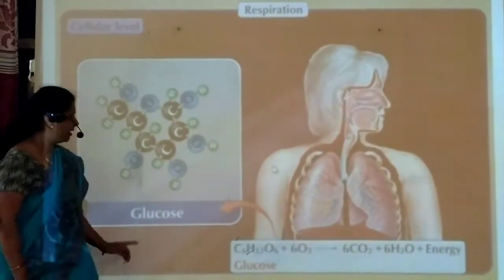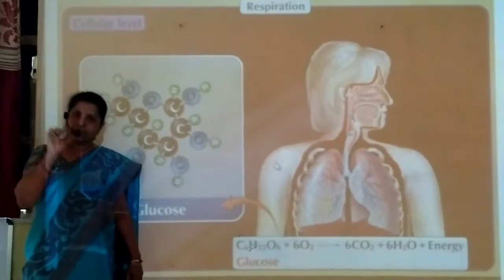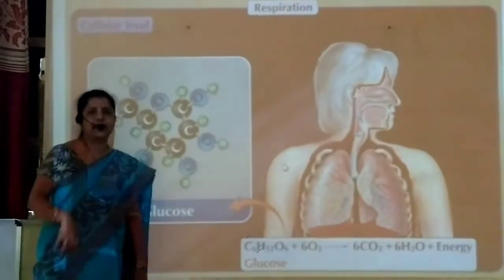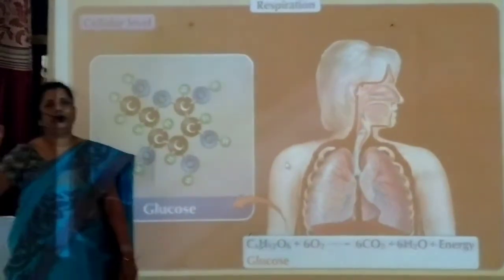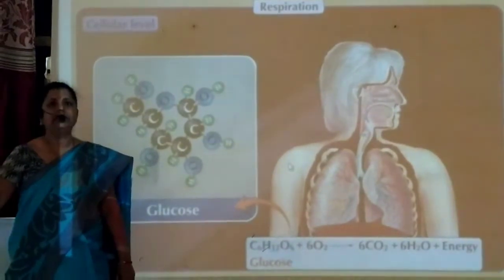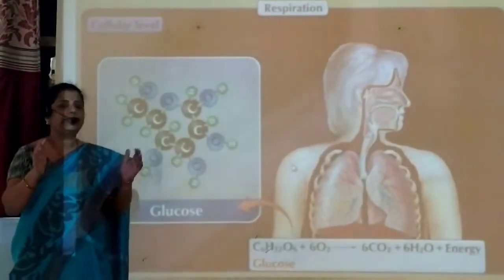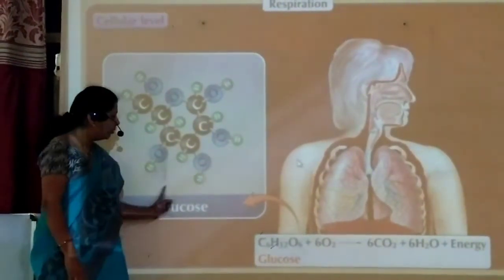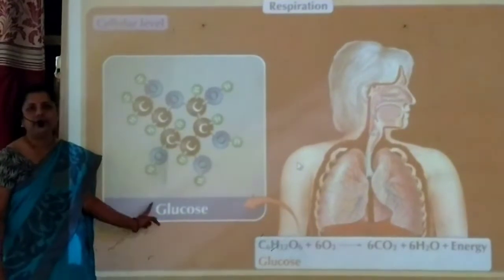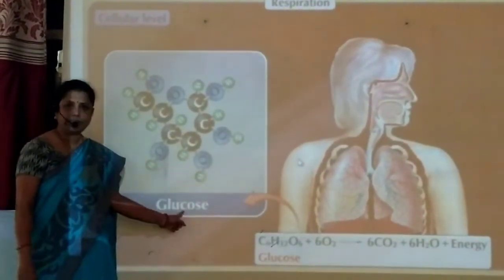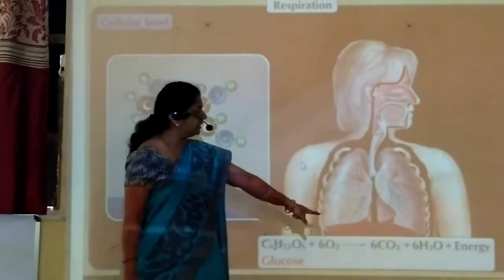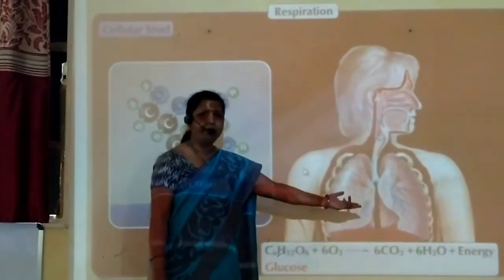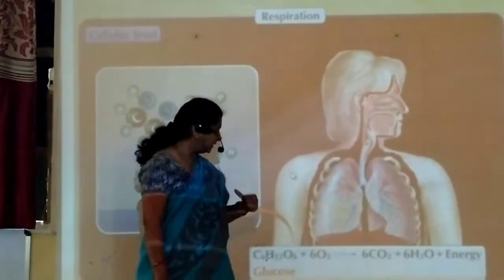The main respiratory substrate is glucose. The respiratory substrate is the substance which releases energy. In our body, glucose is the main substance which releases energy — it undergoes oxidation, combines with oxygen, and releases carbon dioxide, water, and energy. Energy is released in the form of ATP, which is used for all our life processes.